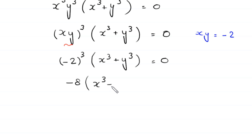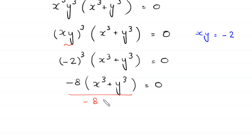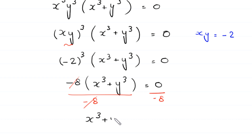We divide both sides by -8. The -8 cancels, and this equation becomes x³ + y³ = 0.